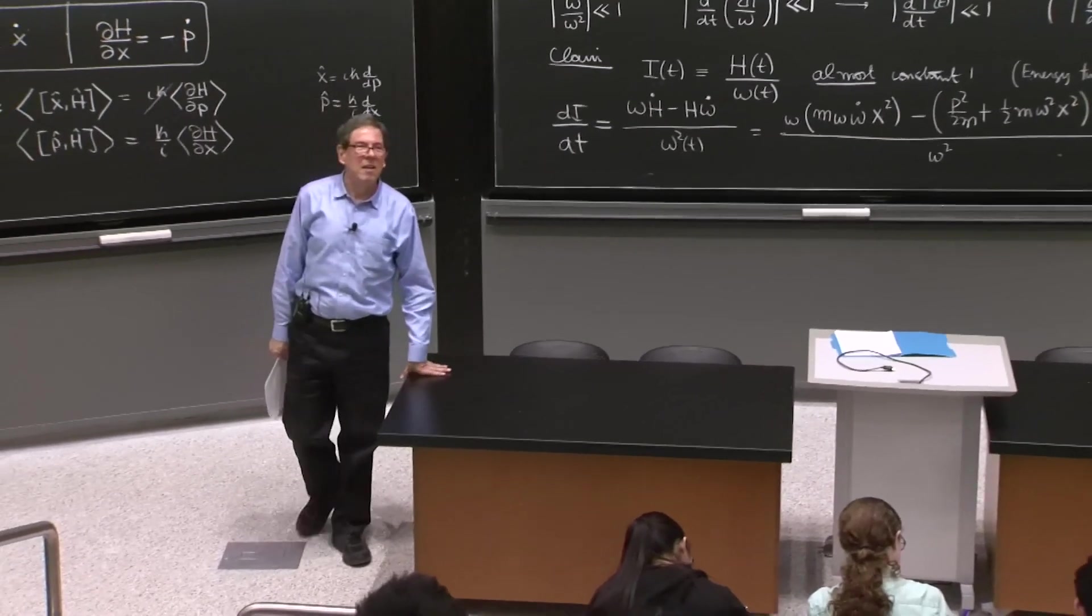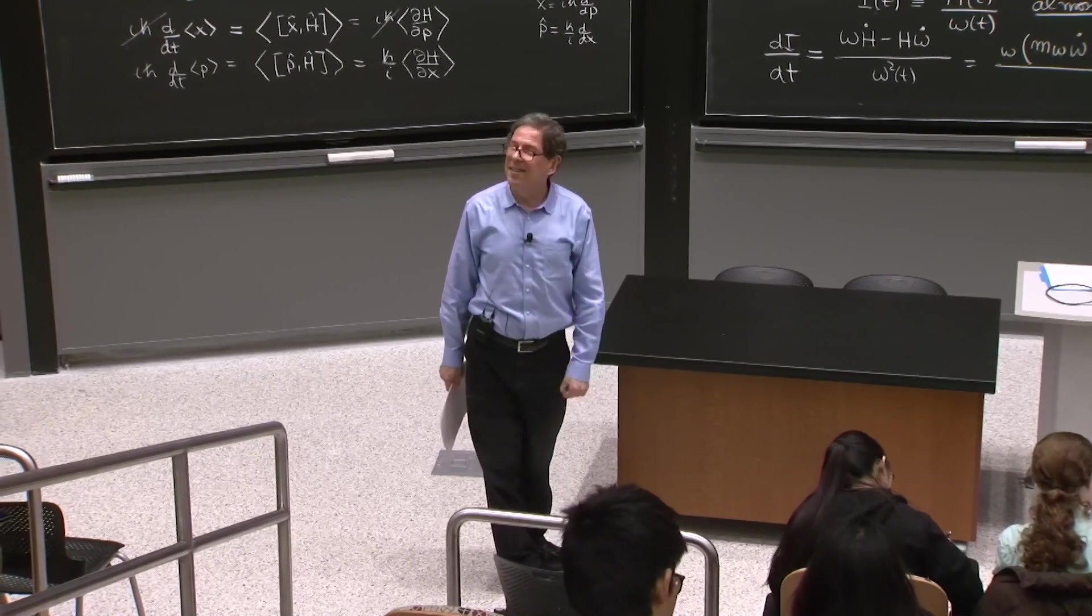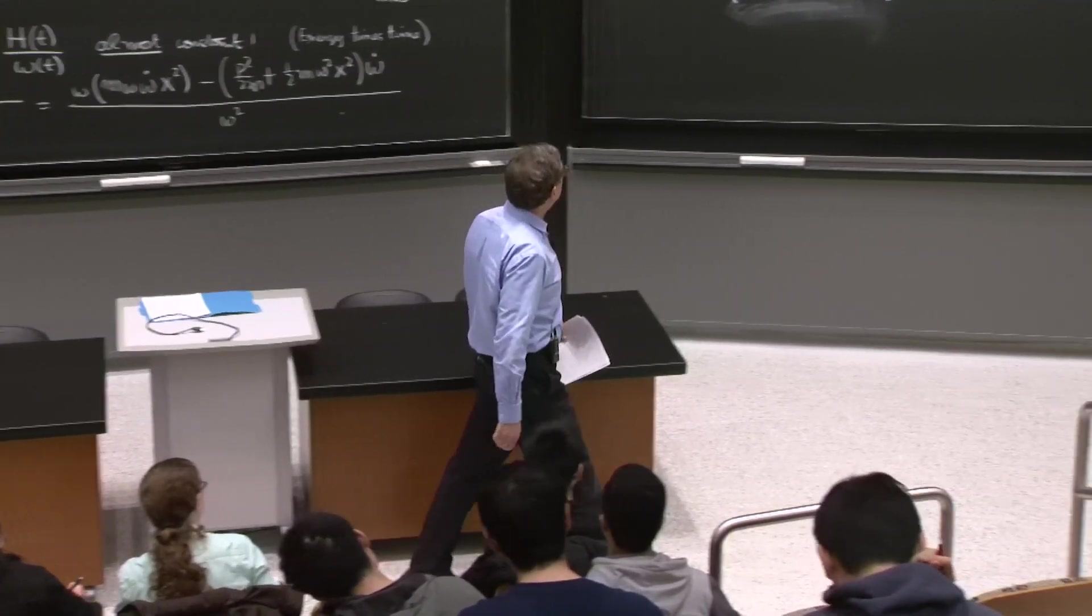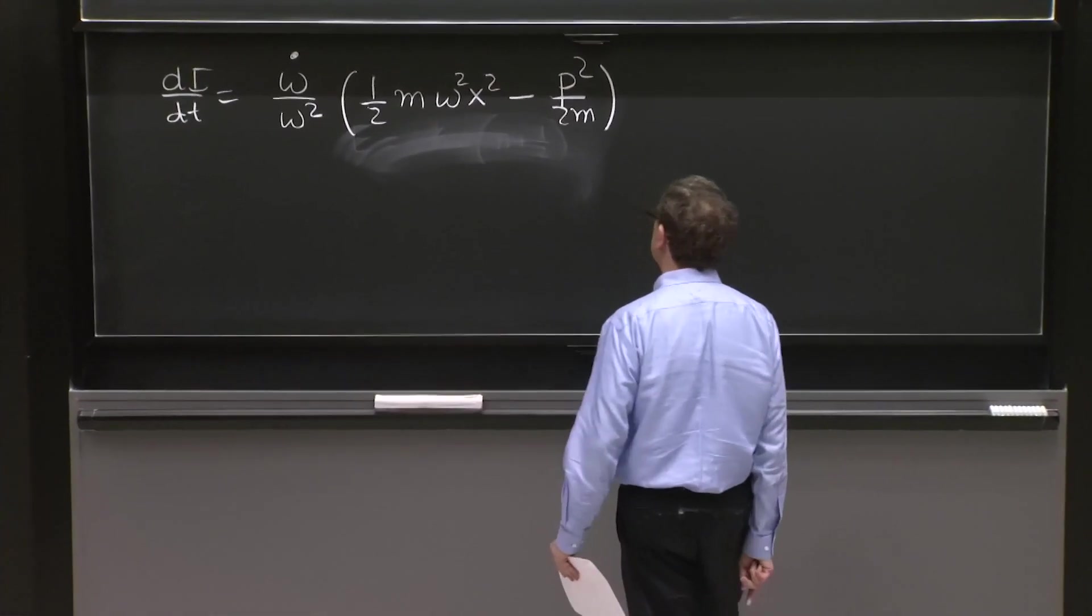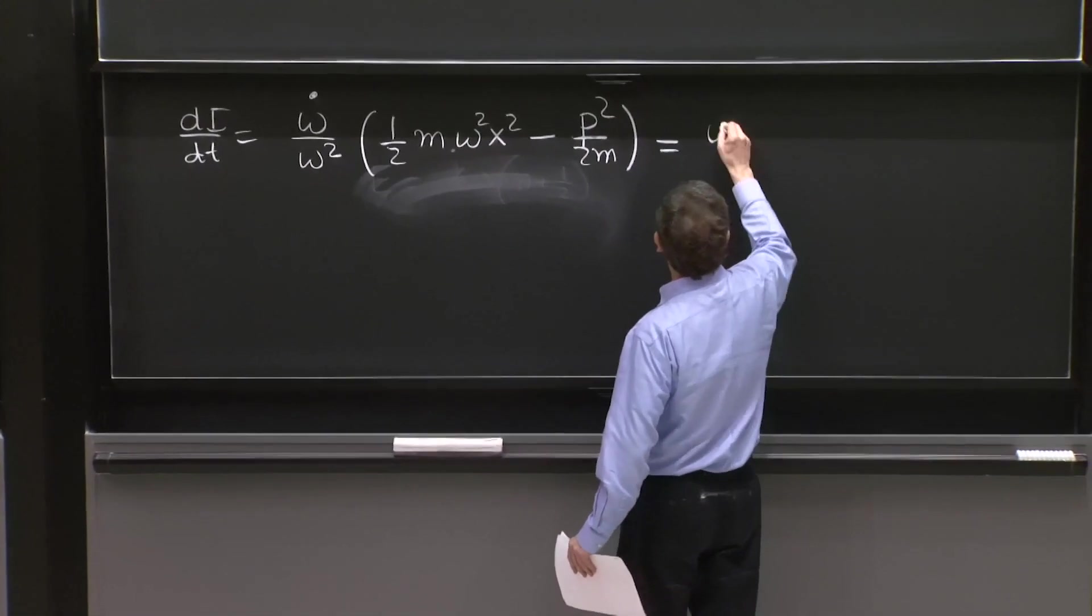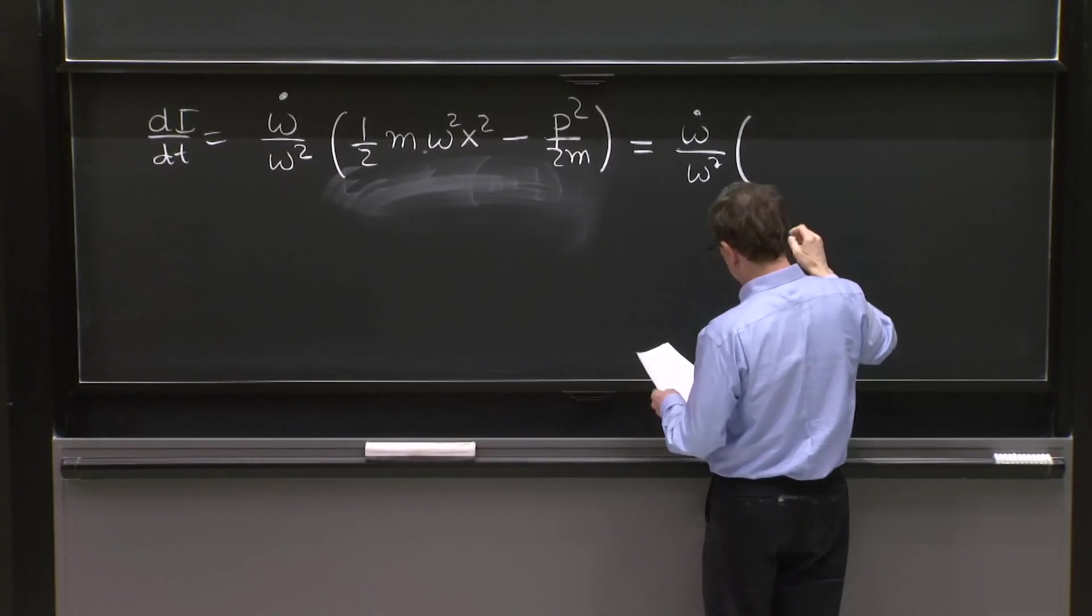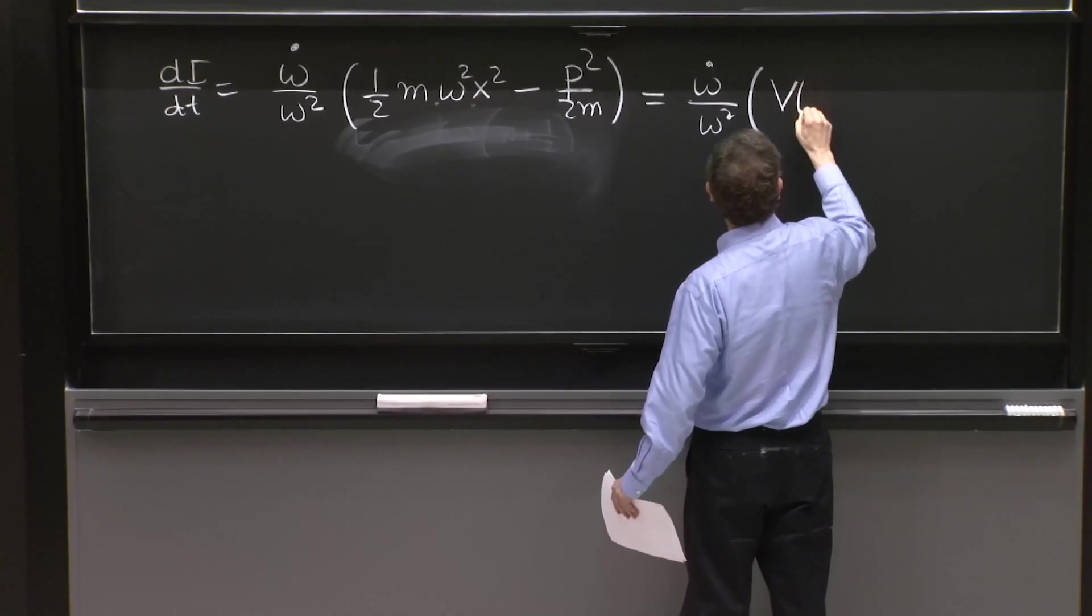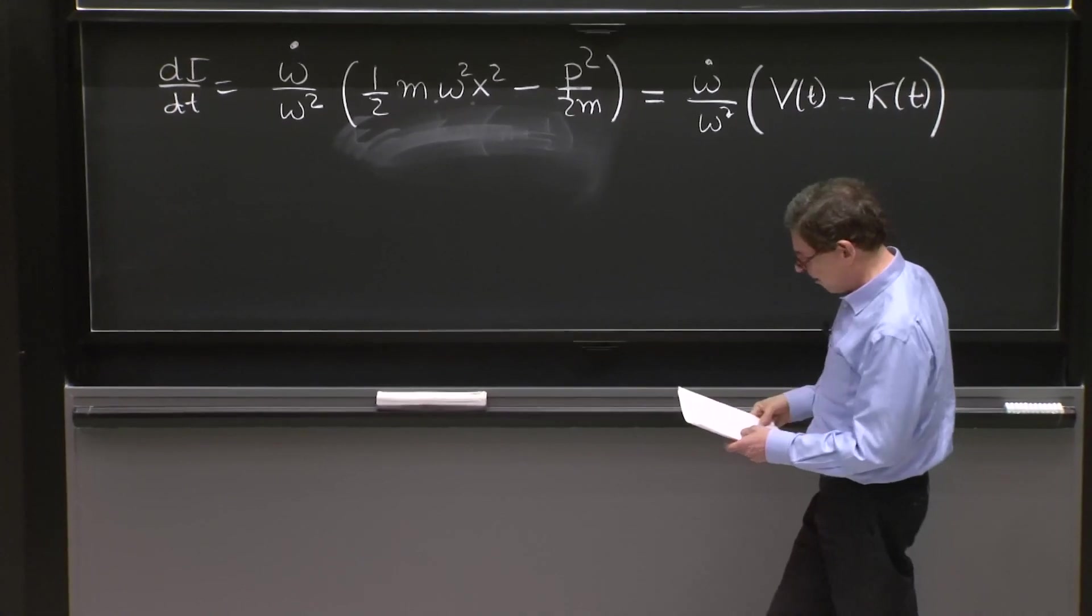So let me write what we get when we simplify this. It's dI/dt is equal to omega dot over omega squared times 1 half m omega squared x squared minus p squared over 2m. That term is clear. The p squared is that. And here we cancel the 1 partially with a 1 half. So we got this. OK. So it doesn't look like it wants to be 0. But it's still very good.